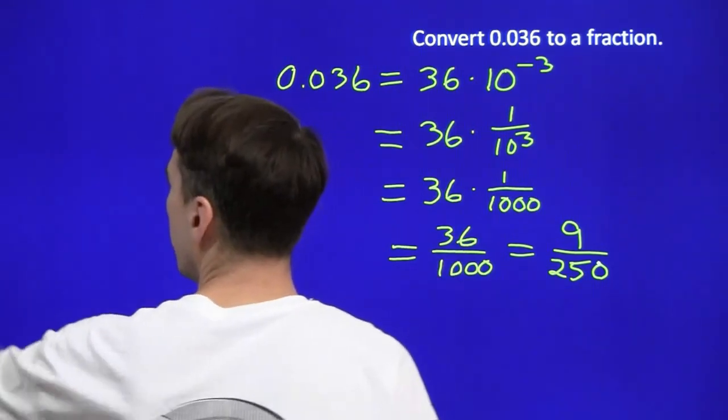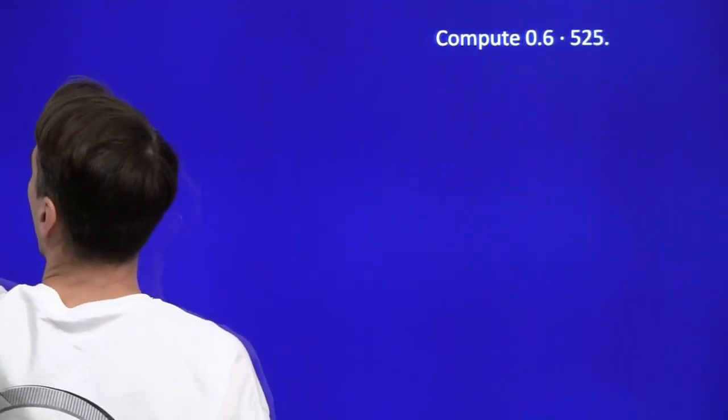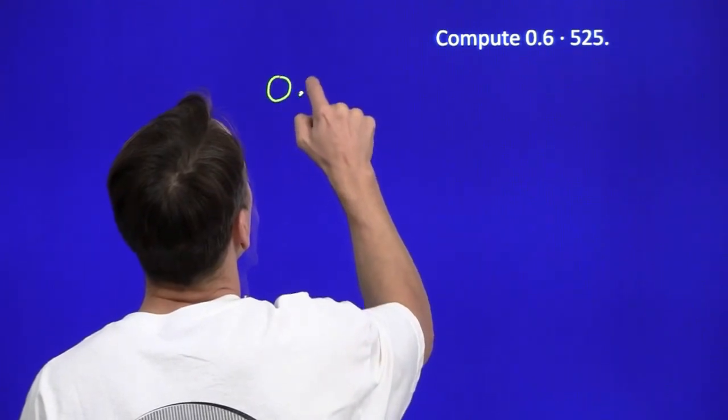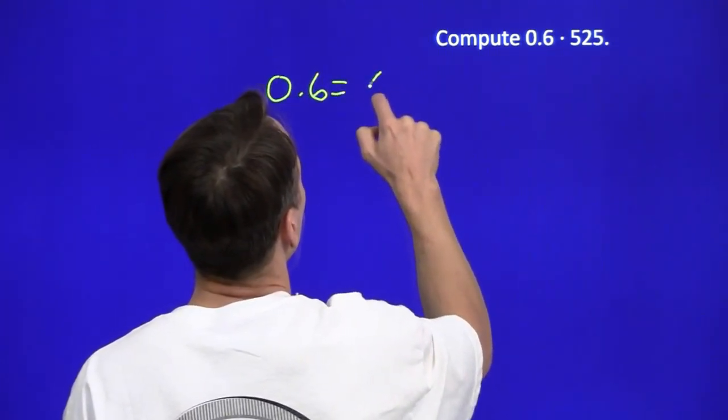We'll go on to the next problem. Decimal multiplication, we know how to handle this. We just take the decimal, we write it as an integer times the power of 10.